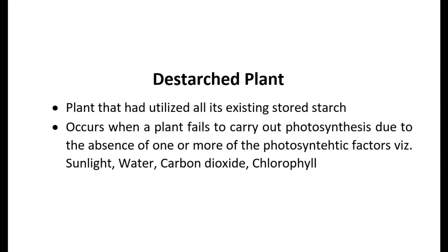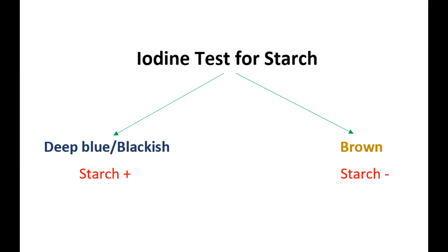A de-starched plant cannot remain alive for long unless it is resupplied with the vital factors necessary for photosynthesis to occur. The absence or presence of starch, and thereby photosynthesis, is determined using iodine solution, which turns blue-black in color in the presence of starch but retains its original brown color in the absence of starch.